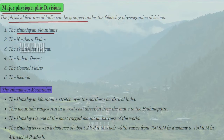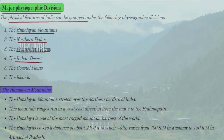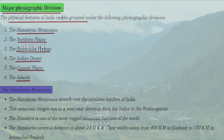The major physiographic divisions of India can be grouped as follows: the Himalayan mountains, the northern plains, the peninsular plateau, the Indian desert, the coastal plains, and the islands. Let's study each of these physiographic divisions in detail.